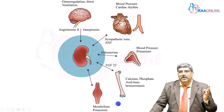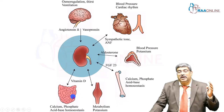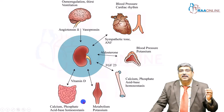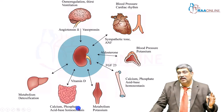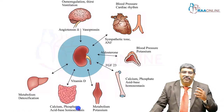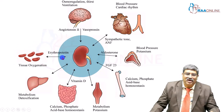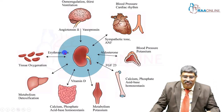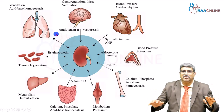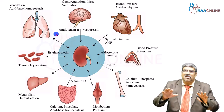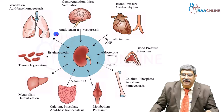With regard to muscle, there might be protein catabolism and potassium might go up. Through vitamin D and the gastrointestinal tract, there might be alteration in calcium, phosphate, and acid-base. Through the liver, the metabolism of drugs will definitely be altered. Through erythropoietin and the hematological system, anemia and tissue oxygenation are going to be affected. With the lung, ventilation and acid-base metabolism will be altered. These are all significant alterations across organ systems in chronic kidney disease.